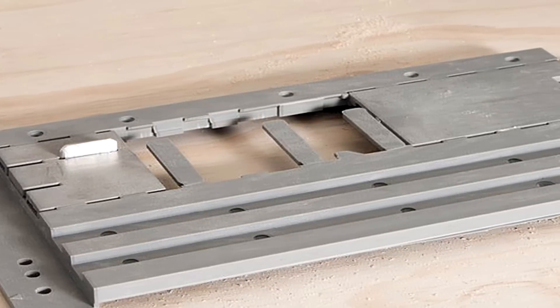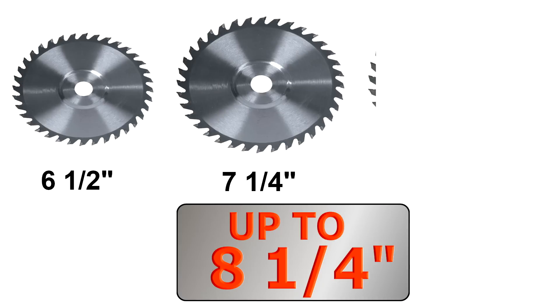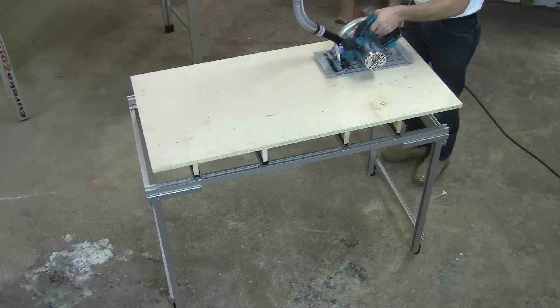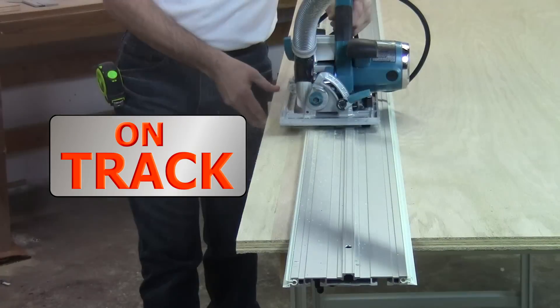The EZ Smart Track Saw System includes the universal saw base, fits over 90% of the left or right bladed 6.5, 7.25, or 8.25 circular saws currently on the market. The EZ Smart Track Saw System includes anti-chip inserts for use either on the guide rail or off.